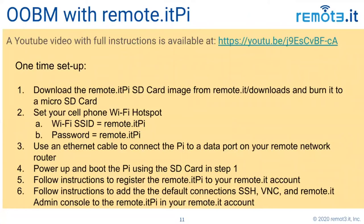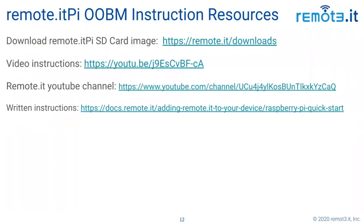Then connect your Pi via Ethernet cable to the LAN side of that router, power it up, and it will join the Wi-Fi network. You'll need to register that Pi to your Remote.it account and install the three default services: SSH, VNC, and the Remote.it Pi admin console. After you've done all that, you're ready to access that remote network. If you have a little experience with Pi and Remote.it, you could probably set this whole thing up in less than 10 minutes.